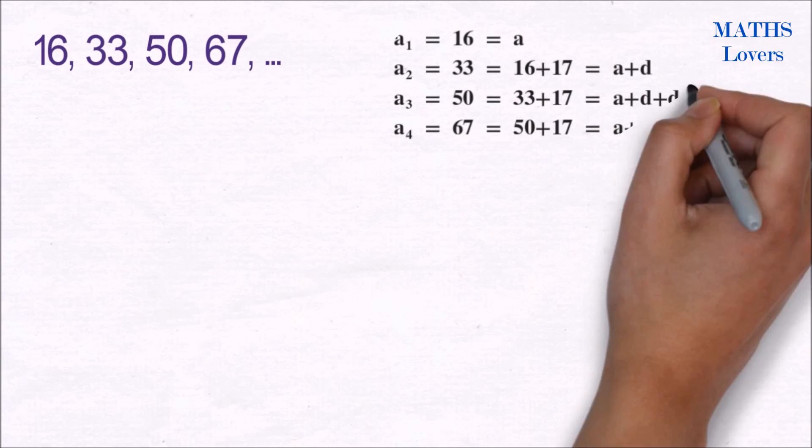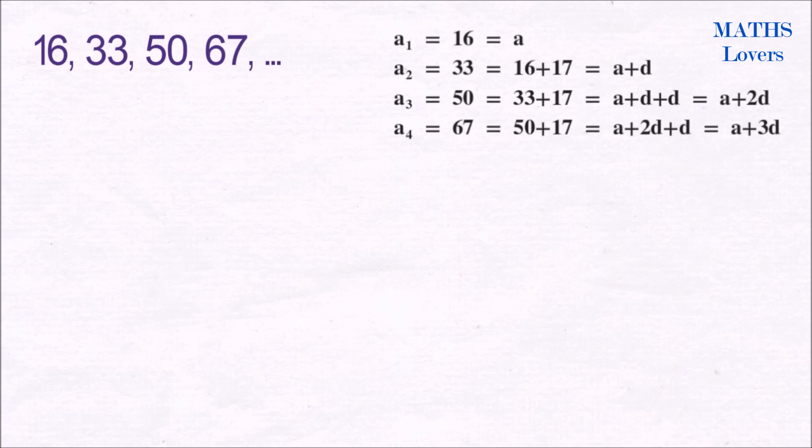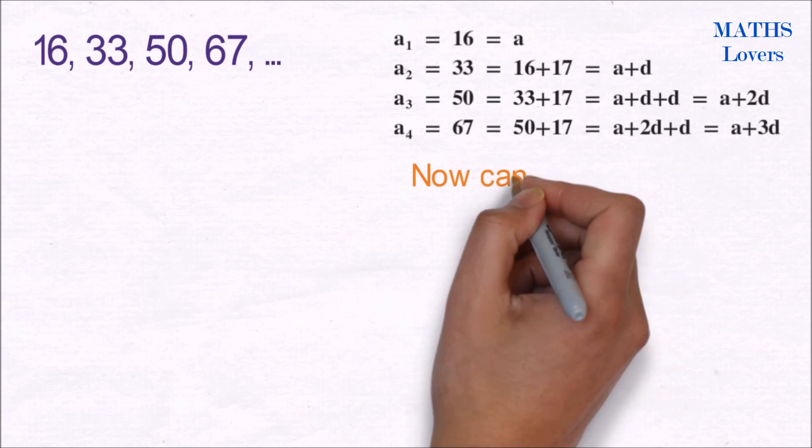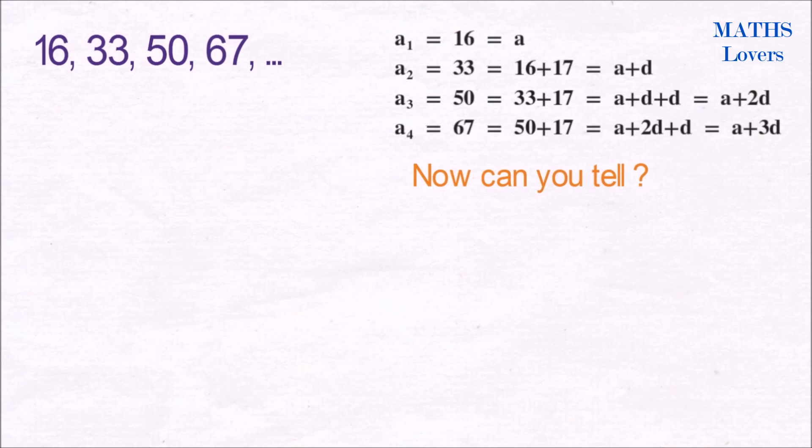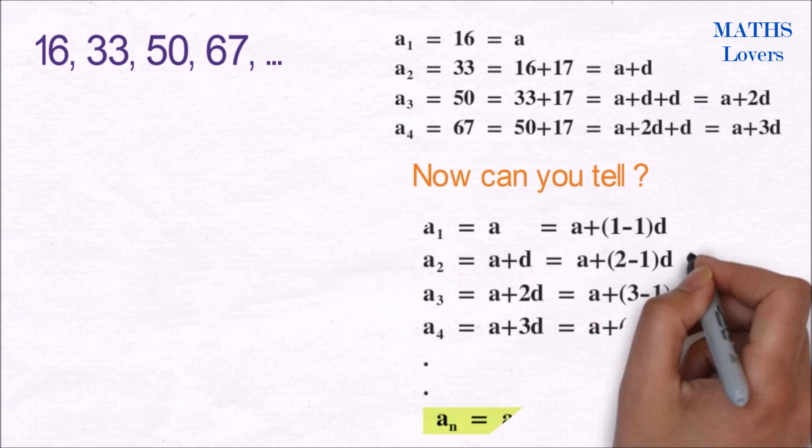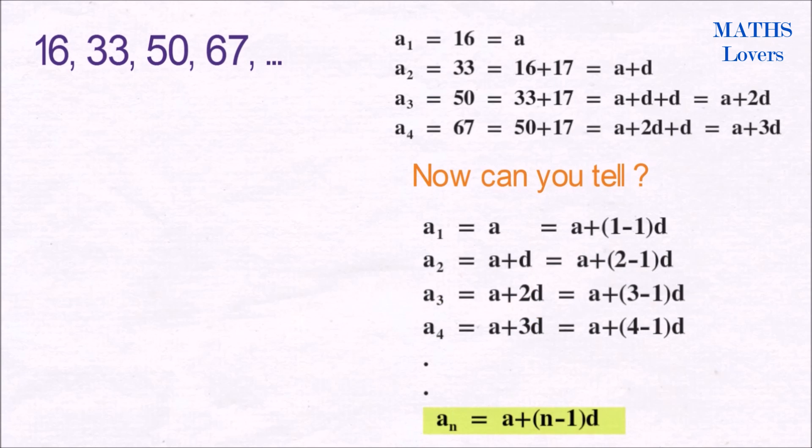Let's derive a general formula to find out the nth term of any AP. First, writing every term in form of a and d. Did you get any pattern? Now can you tell the nth term? Let's simplify it more. The nth term of any AP is a_n equals a plus n minus 1 times d.